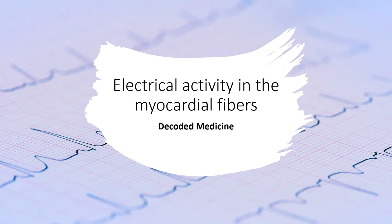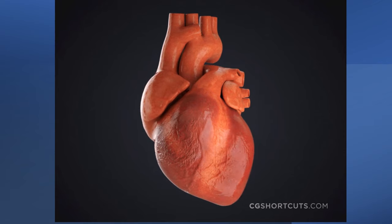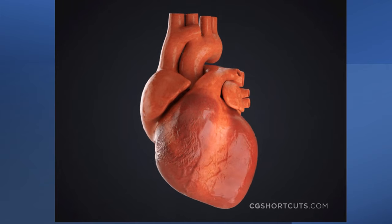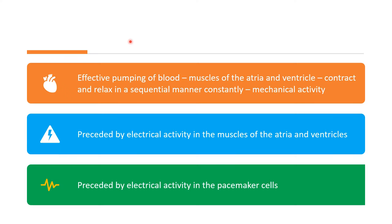Let's learn about the electrical activity in the myocardial fibres of the heart. The heart pumps blood to the tissues of the body constantly. This is possible because the atria and the ventricles of the heart contract and relax in regular intervals. For effective pumping of blood, the muscles of the atria and ventricle need to contract and relax in a sequential manner constantly. This contraction and relaxation of the atria and ventricular muscles is the mechanical activity, which is always preceded by an electrical activity in the muscles.